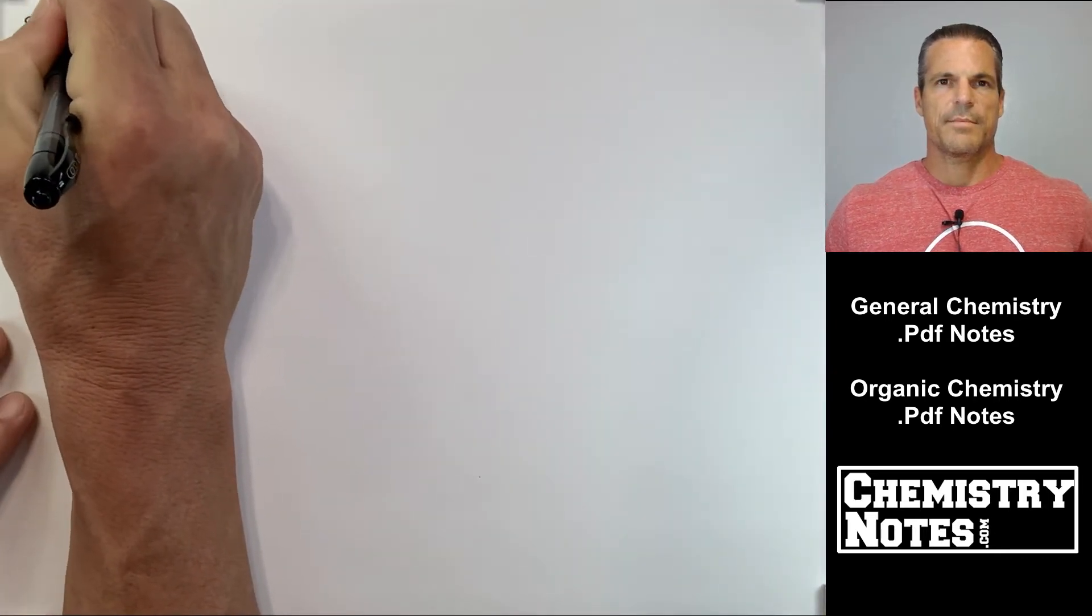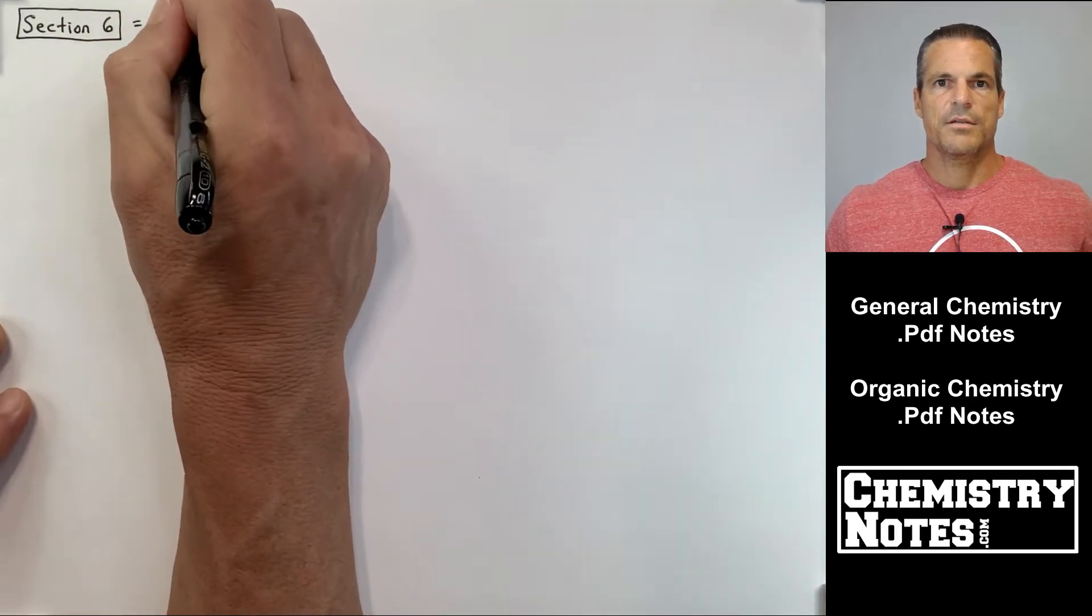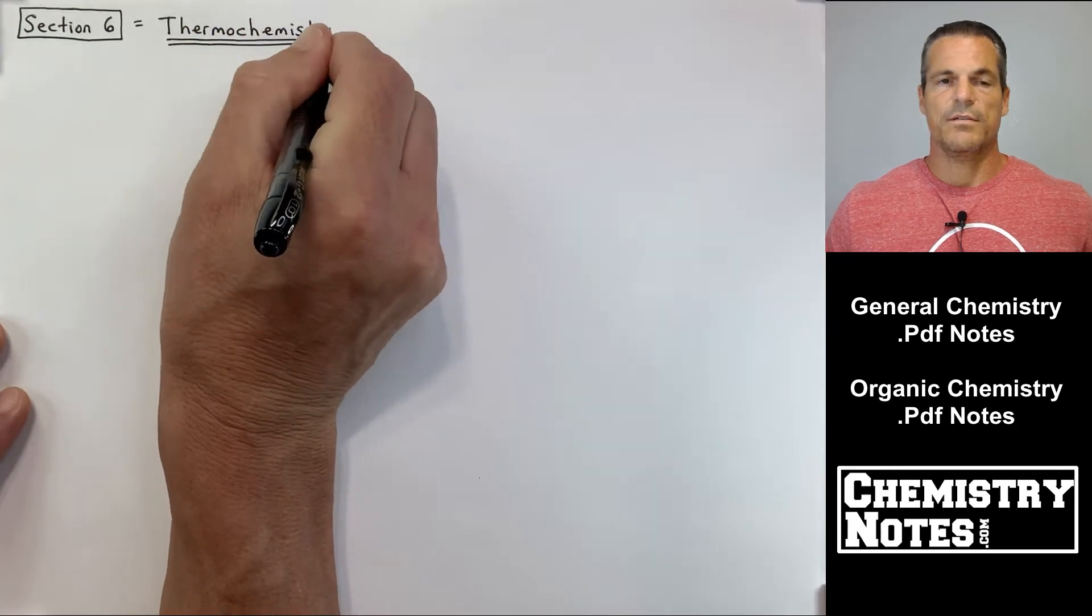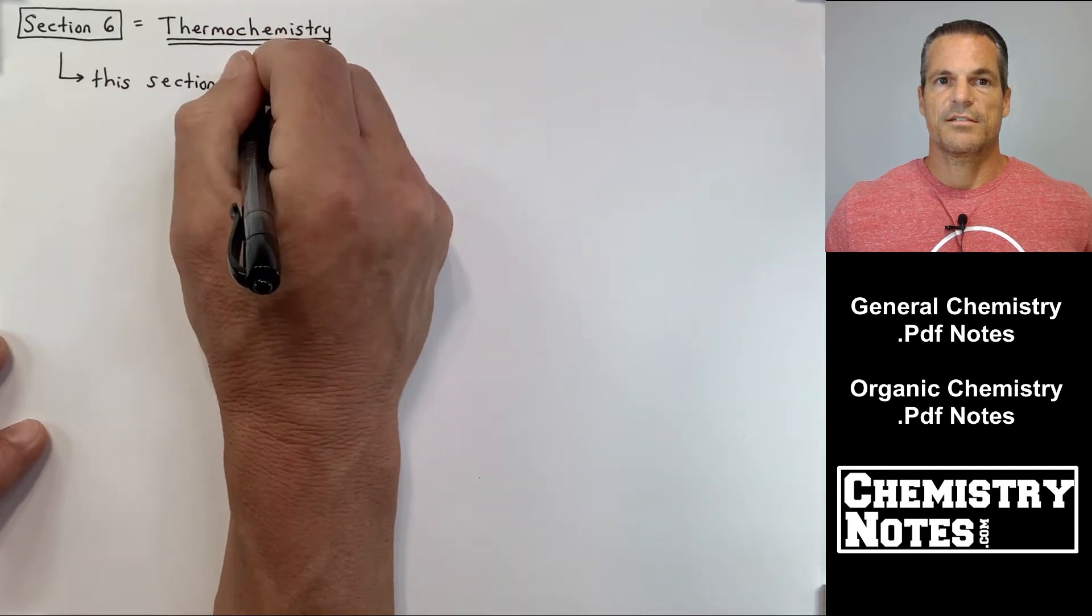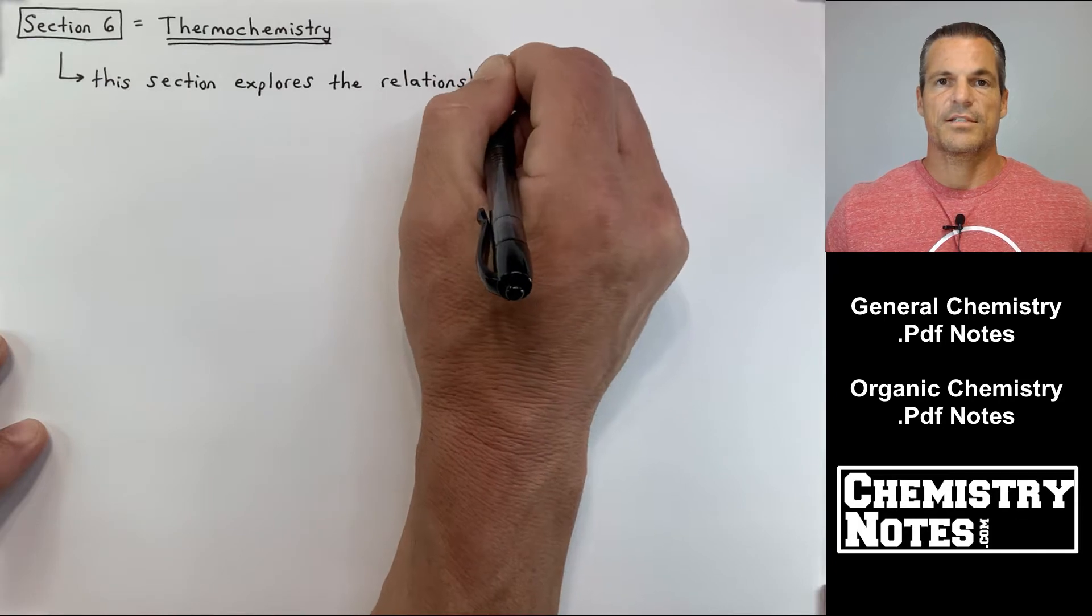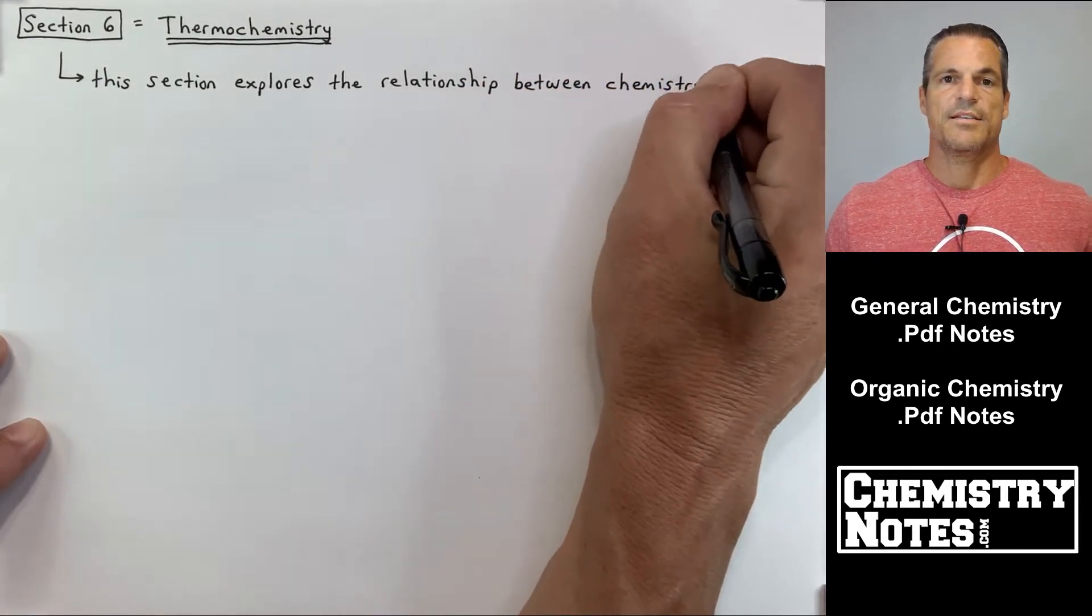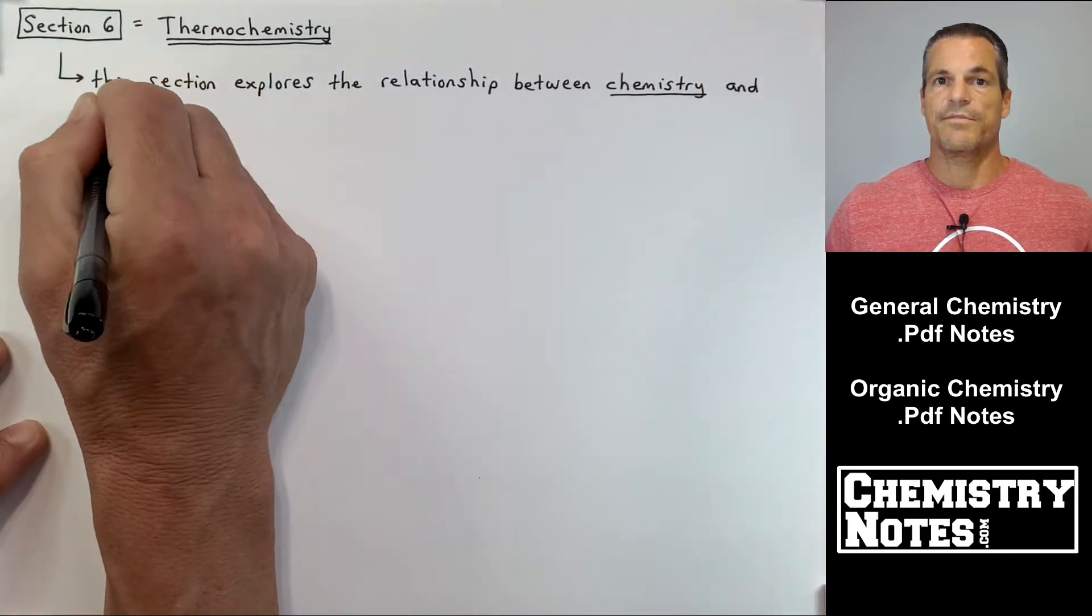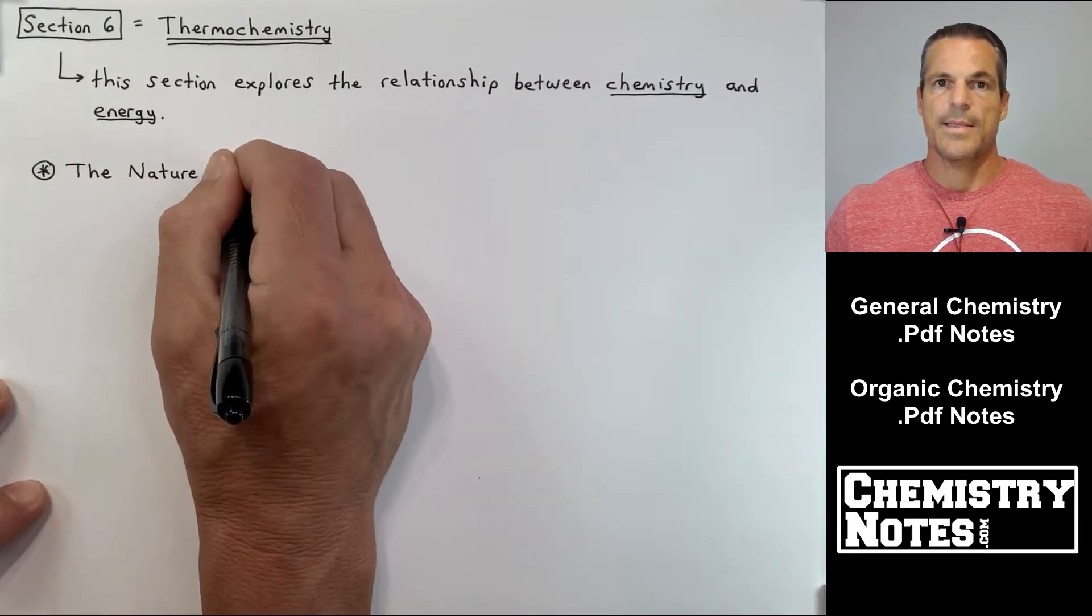Hi everybody, Justin here from chemistrynotes.com and today we're starting a brand new section. This is section 6, so it would be S6E1 for section 6 episode 1. Section 6 is entitled thermochemistry and this section, all of section 6, all of its videos explore the relationship between chemistry and energy. So in today's video, we're going to talk about the different types of energy and we're going to talk about potential energy and kinetic energy first.